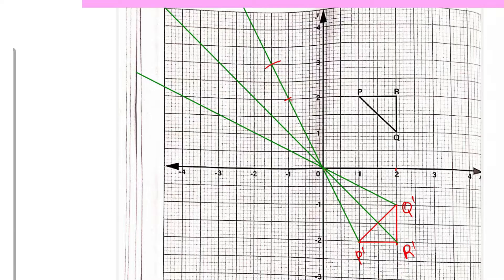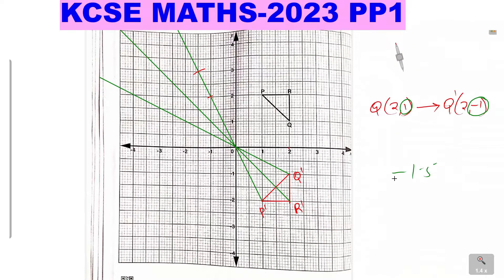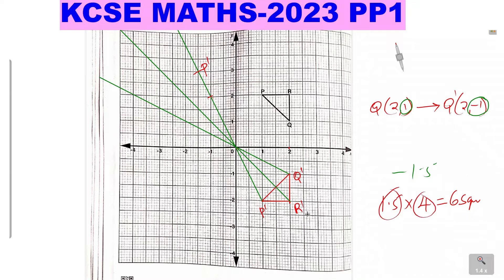A simpler method: just count the number of squares along the straight line from P' to the center of enlargement. They are 1, 2, 3, 4 — four squares. One and a half times four squares gives six squares. So from the center of enlargement, count six squares: 1, 2, 3, 4, 5, 6 — and that is where P'' is located.